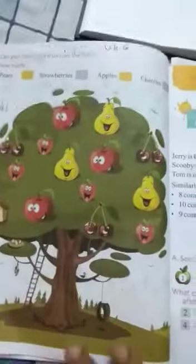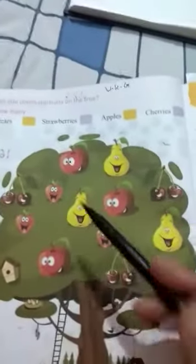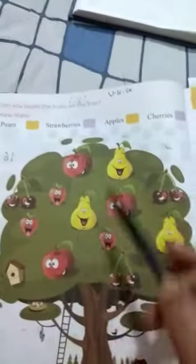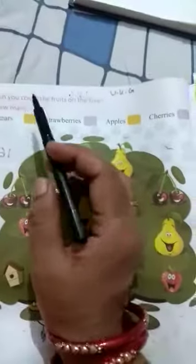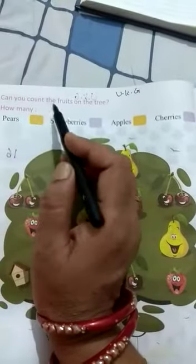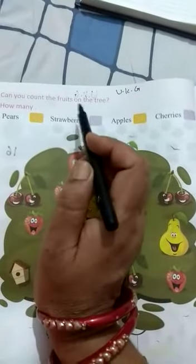Turn your page to page number 24. Look here — what is this? This is a tree. What is this? These are fruits. Look here, look here. Can you count the fruits on the tree? Kya tum count kar sakte ho?